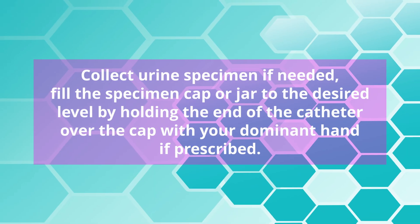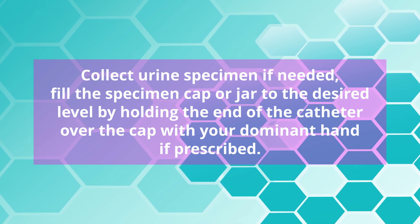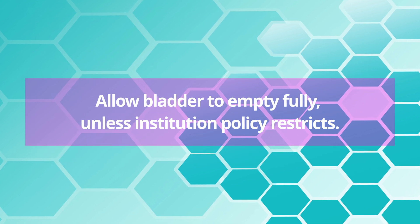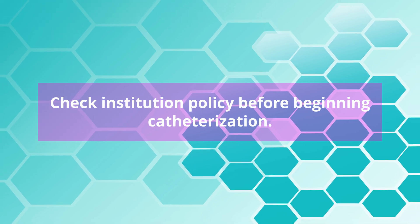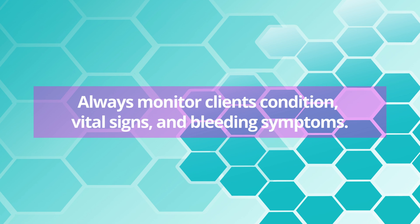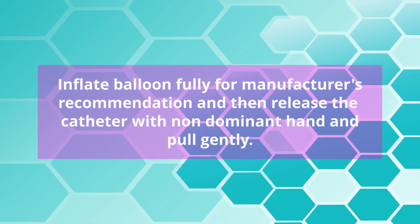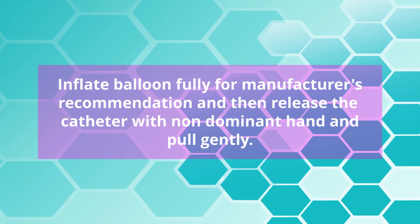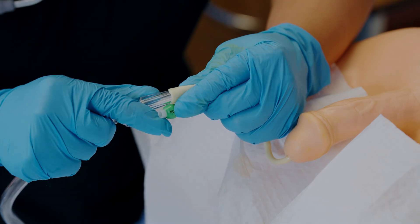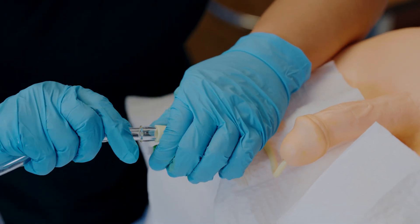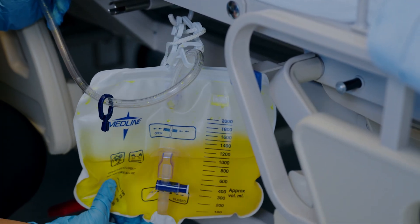Collect a urine specimen if needed by filling the specimen cup to the desired level. Allow the bladder to empty fully unless institution policy restricts this — check policy before beginning catheterization. Always monitor the client's condition, vital signs, and bleeding symptoms. Inflate the balloon fully per the manufacturer's recommendation, then gently pull back the catheter. Attach the indwelling catheter to the collecting tube of the drainage system. The drainage bag must be below the level of the bladder; attach the bag to the bed frame and do not place it on the side rail.